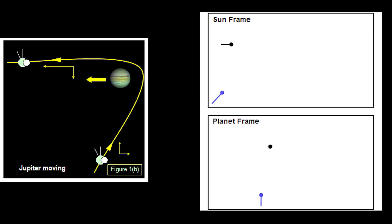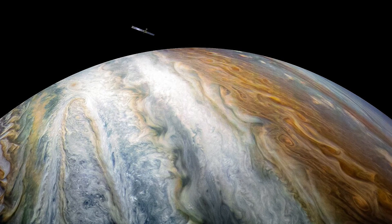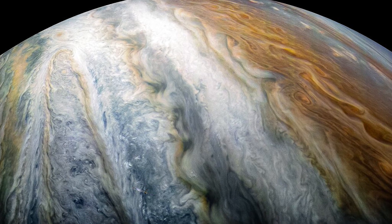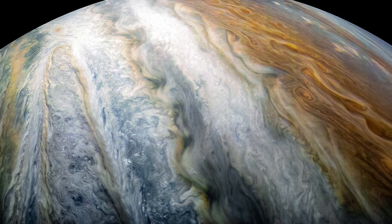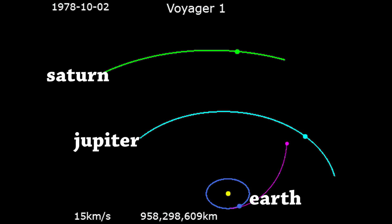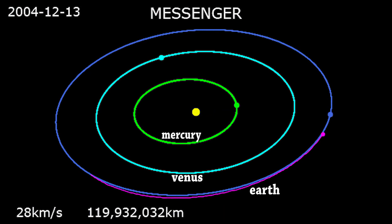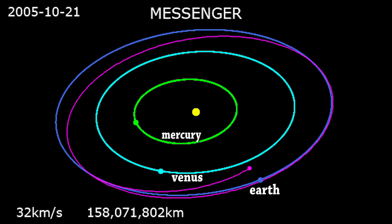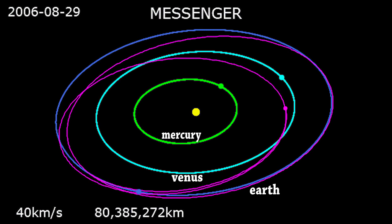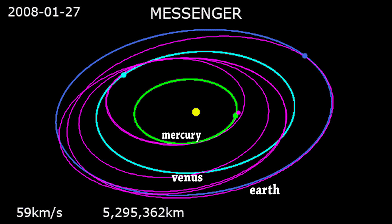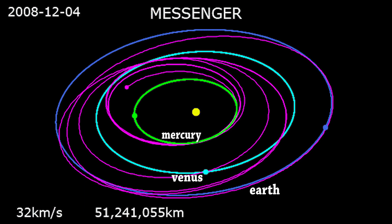Because the planet is so huge compared to the spacecraft, there is no significant effect on the planet's orbital speed. But since the spacecraft is very small, it receives a huge boost. This effect can also be reversed: if you approach the planet from ahead rather than from behind, the spacecraft will lose velocity, giving it to the planet. The Messenger mission to Mercury had to do several flybys of Venus to slow down enough to reach Mercury.